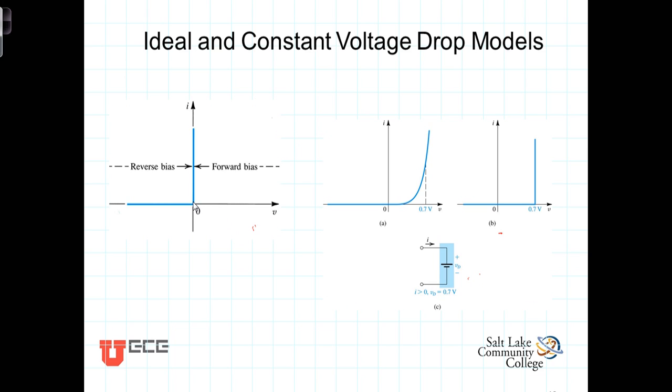So instead of replacing the diode with a short circuit when it's conducting and an open circuit when it's not conducting, it'll still be an open circuit when it's not conducting using the constant voltage drop model, but when it is conducting, the diode will be replaced with a constant voltage source.